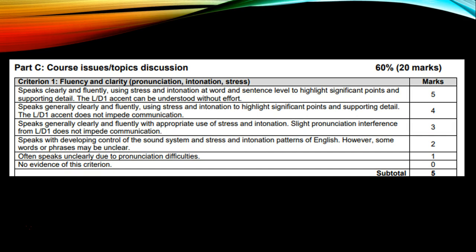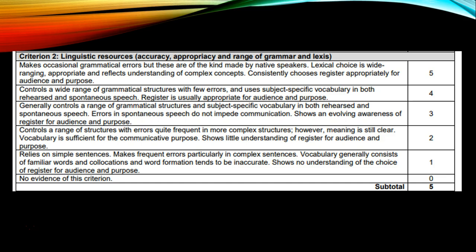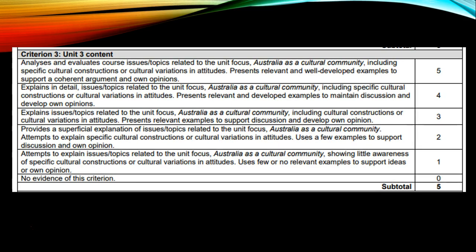This is the marking key for Part C. The first criterion is fluency and clarity — pronunciation, intonation and stress — and it counts for five marks. Criterion 2 is linguistic resources — vocabulary accuracy, appropriate language, and grammar — also five marks. Criterion 3 is Unit 3 content: discussing Australia as a cultural community, an issue related to that, with detailed explanation of cultural understanding, cultural variations and attitudes. You present a relevant and well-developed example — essentially the textual evidence — and it counts for five marks.